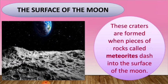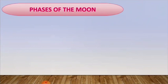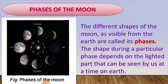Now let's see phases of the moon. The different shapes of the moon as visible from the Earth are called its phases. The shape during a particular phase depends on the lighted part that can be seen by us at a time on Earth.